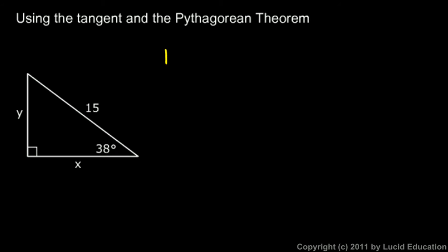Let's write that in this case. That means the tangent of 38 degrees has to be y over x. Now I have two variables here. I can't solve this for y if I don't know x, and I can't solve it and get a value for x if I don't know y. If I have two variables then I need two equations.